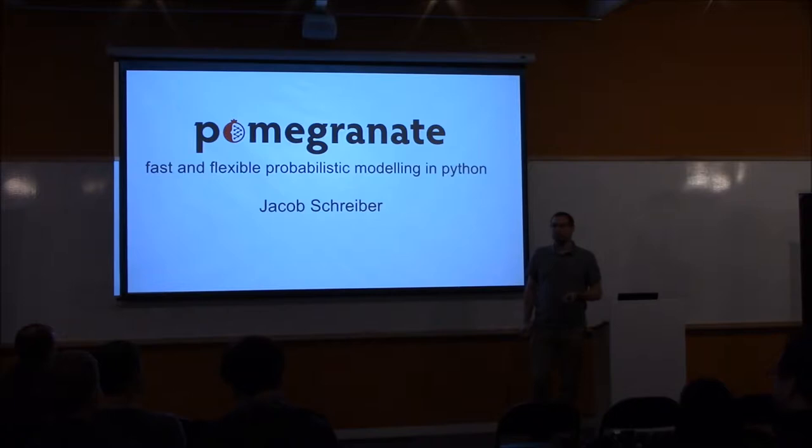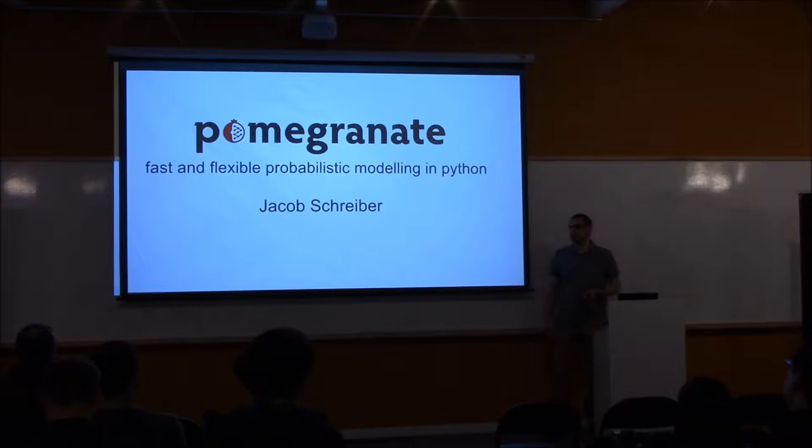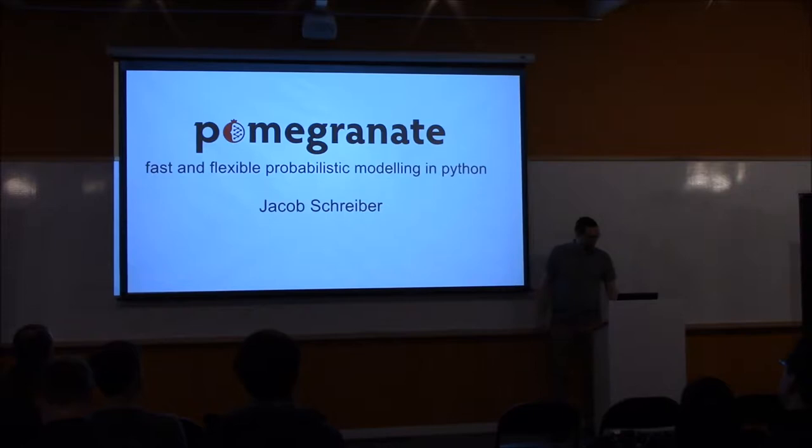Hello everybody. My name is Jacob Schlaiber. I'm a third year graduate student at the University of Washington where I study computer science, and particularly its intersection with genome science. I'm here to talk to you today about a package I've been writing called pomegranate, which implements flexible probabilistic modeling. But before I get to that, I'd like to share a little bit about how the project evolved over the years, and in doing so give you a bit of background about myself.